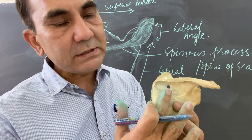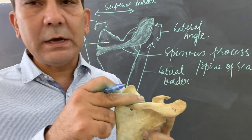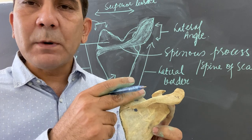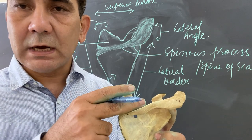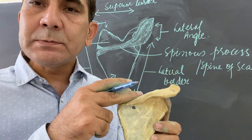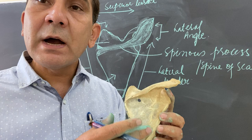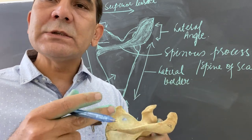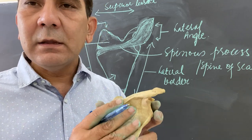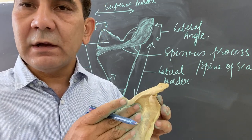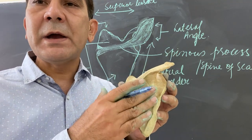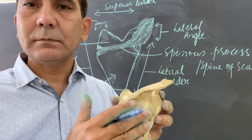From the lateral side, the fossa just above the spine of the scapula is called the supraspinous fossa, and the portion below it is called the infraspinous fossa. In the supraspinous fossa, the supraspinatus muscle originates. In the infraspinous fossa, the infraspinatus muscle attaches and originates from here.